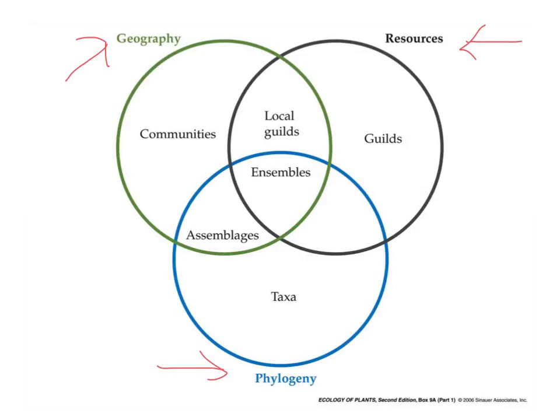So all over the world there are a bunch of different taxa or species. Guilds are species that are similar — that do similar things — not necessarily taxonomically related.